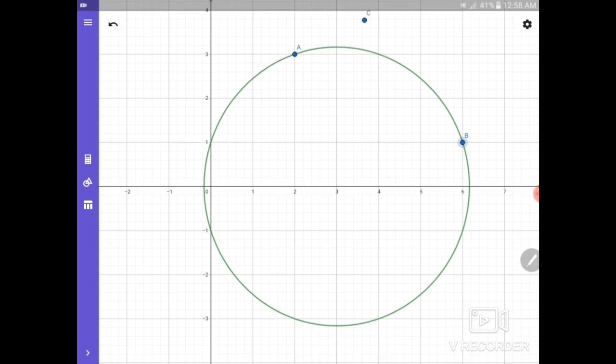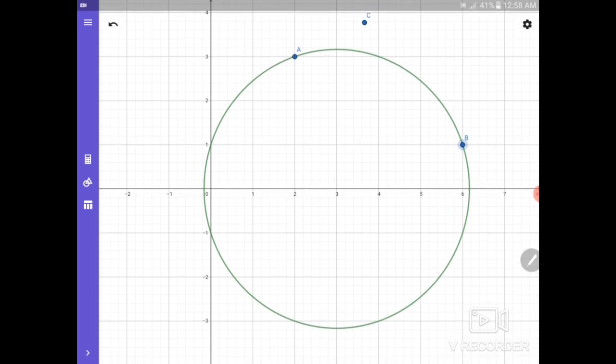Then lastly, 4 and negative 3. 4 and negative 3. So it's here. As you can see, it satisfies all the conditions. The center at 3 and 0, radius which is square root of 10 or 3.16. Then it passes through the points 2 and 3, which is point A. 6 and 1, which is point B. And 4 and negative 3, which is point C.